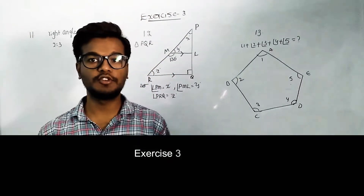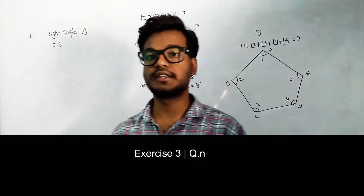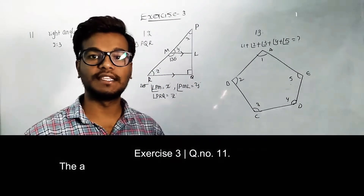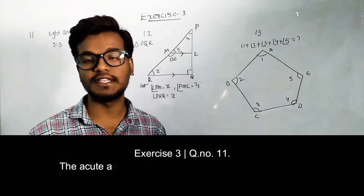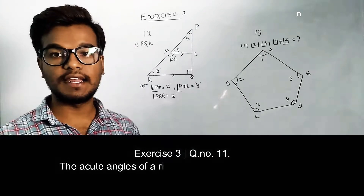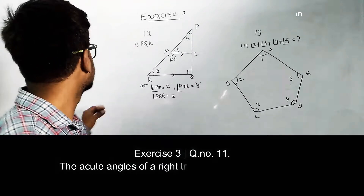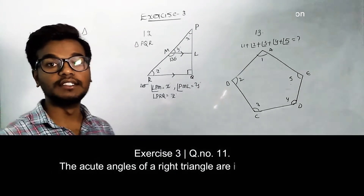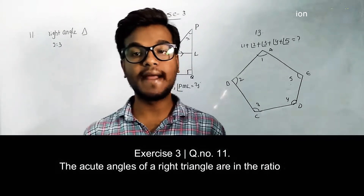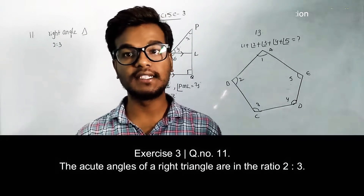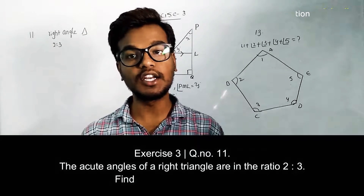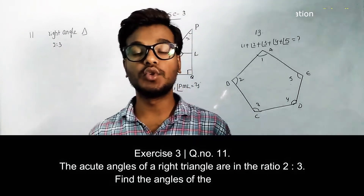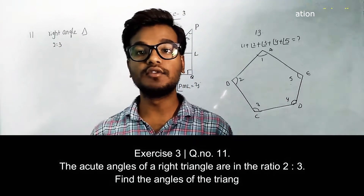In this module we are going to discuss solutions for the 11th, 12th, and 13th questions in Exercise 3. The 11th question gives a right angle triangle where two acute angles are in the ratio 2:3, and we need to find the angles.